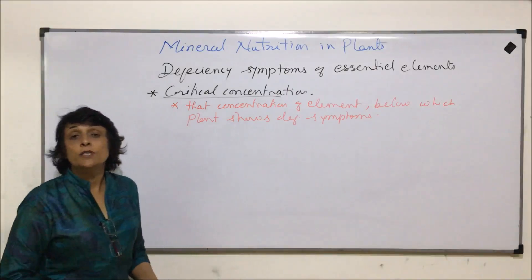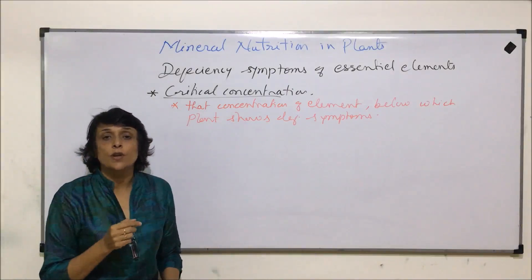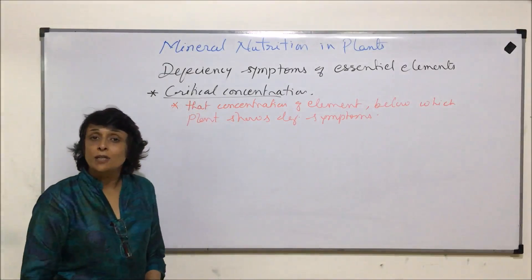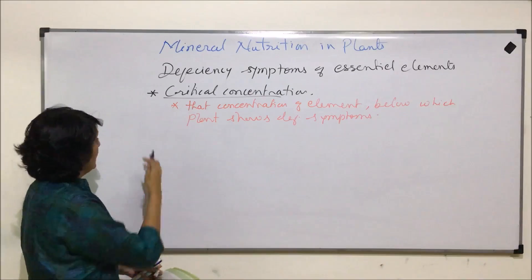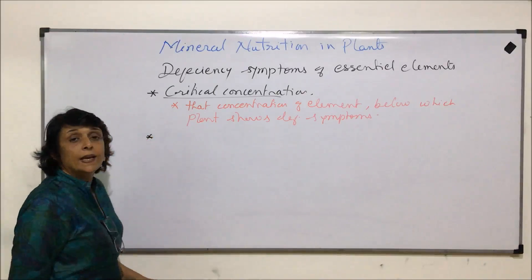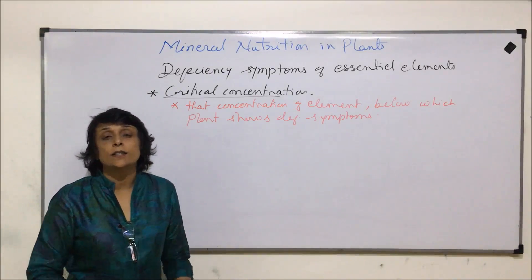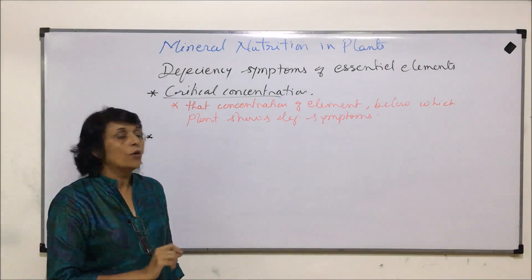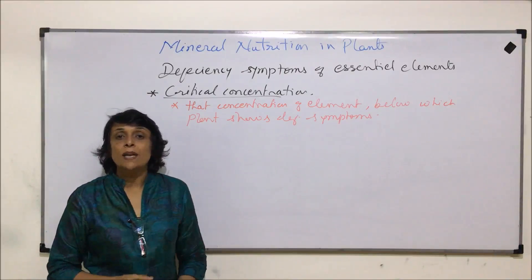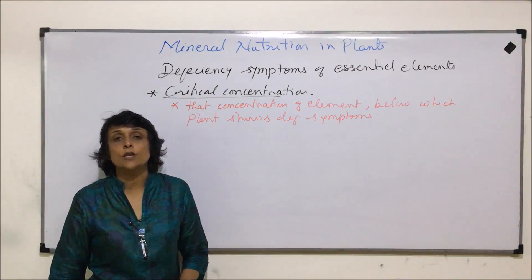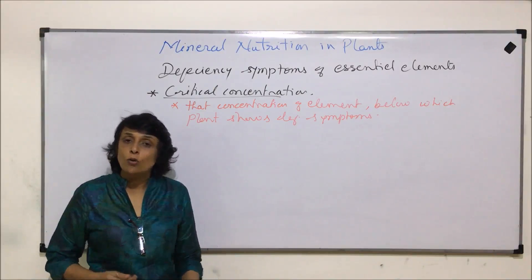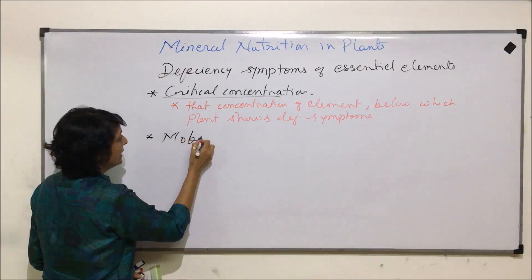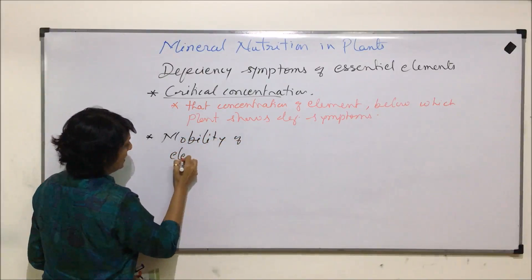The minimum concentration below which we start seeing deficiency signs is known as critical concentration. In certain element deficiencies, we find chlorosis or yellowing of younger leaves. In some elements, chlorosis takes place in older parts or older leaves, and that depends on the mobility of the elements.